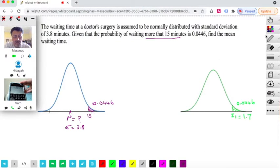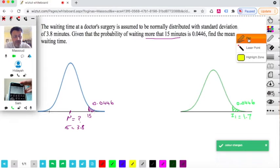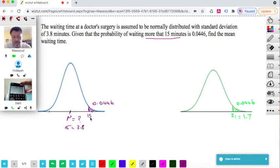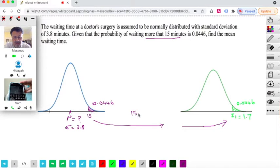So through the conversion formula, we know that 15 here should be related to this value there. And the conversion is 15 minus the mean value, which we don't know, over the standard deviation, which is 3.8. That's supposed to give me 1.7.